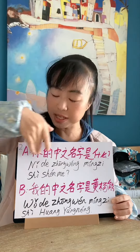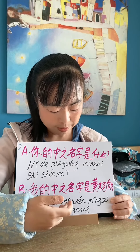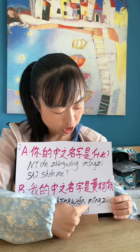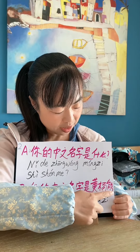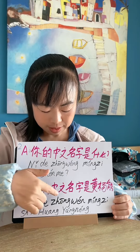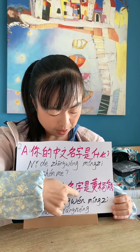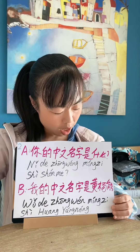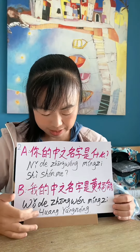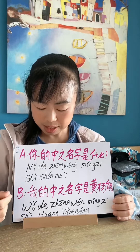It means 'What's your Chinese name?' And then 我的中文名字是黄阳能. 我的 means 'mine', 中文 means 'Chinese language', 名字 means 'name', 是 is a linking word. 黄阳能 is my Chinese name — 黄 is my surname and 阳能 is my given name.